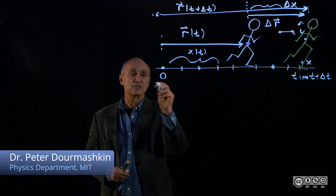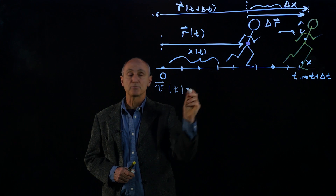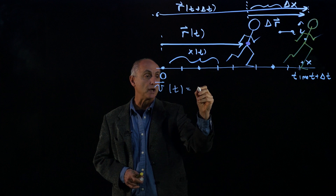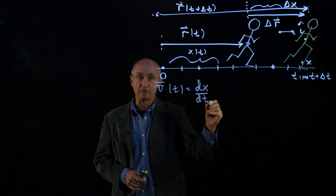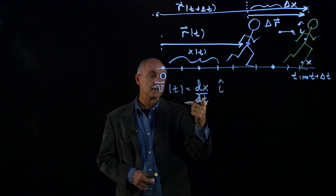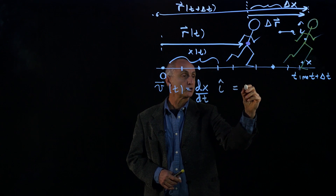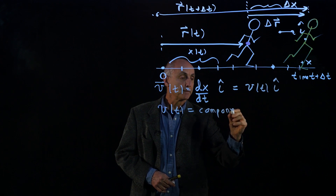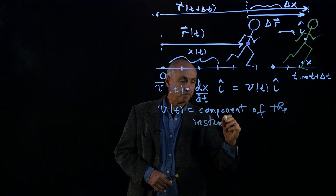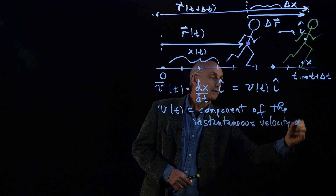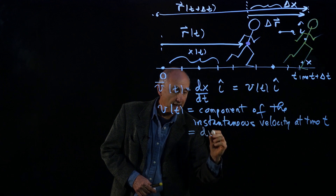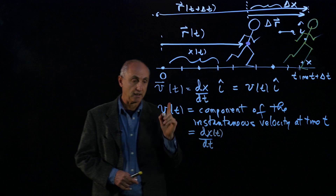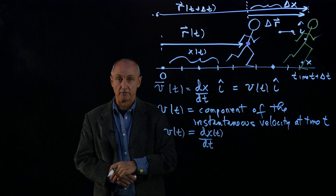We've now described what we call the instantaneous velocity at some time t, and we talked about it as a limit as delta t goes to zero of the displacement over the time, which we wrote as the derivative of the position function in terms of i hat. We'll write that as v of t i hat, where v of t is the component of the instantaneous velocity at time t. This is just a symbol, but we describe this as the derivative of the position function as a function of time — and that's what we mean by the component of the instantaneous velocity.